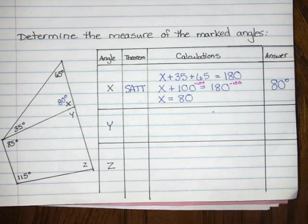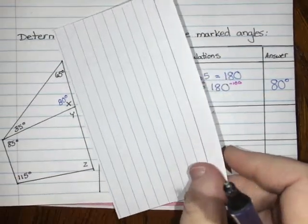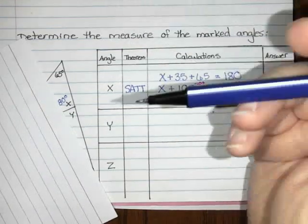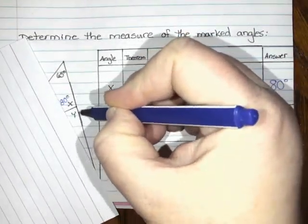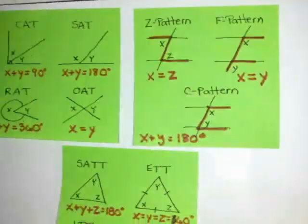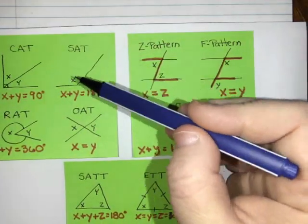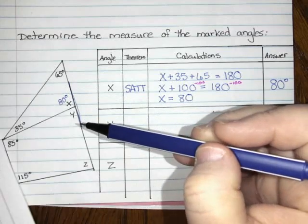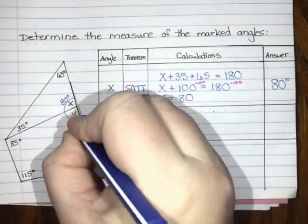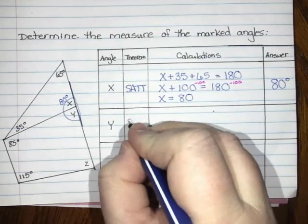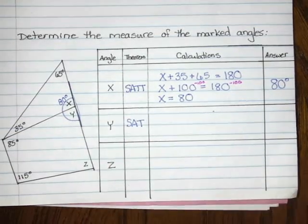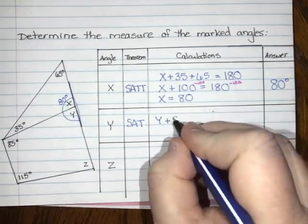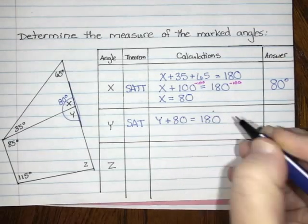But y is the next-door neighbor of angle x. If you look, x and y together form a straight line. That means we can use the supplementary angle theorem — SAT — which says two angles that make a straight line add to 180 degrees. So y plus x, which is 80 degrees, equals 180.